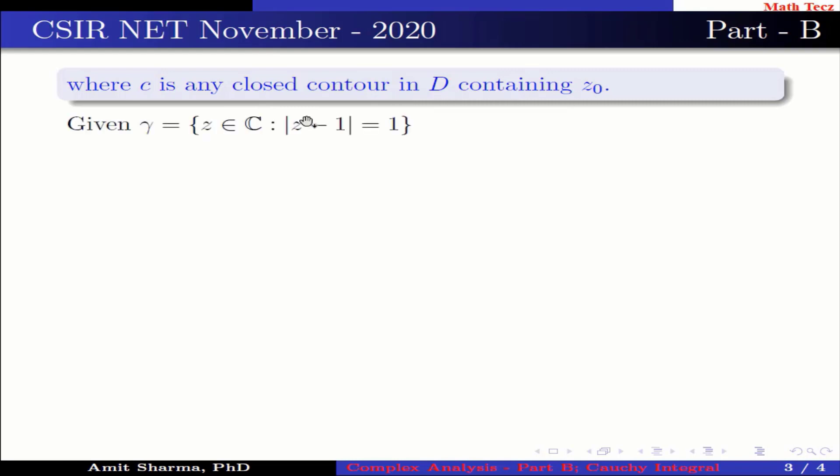Given gamma is z belongs to C such that mod of z minus 1 equal to 1, which equals z belongs to C such that (x minus 1) whole square plus y square equal to 1. Therefore, gamma is a circle having center (1, 0) and radius is 1.